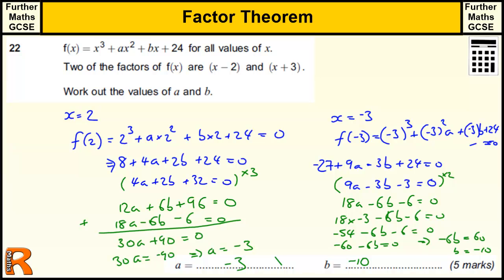Five marks for that. There's one mark for getting the first expression, one mark for getting the second one, one mark for getting some simplified versions — you could take the numbers to the other side, you don't really need to — one mark for making them have a common coefficient so you can add or subtract, and one mark for getting to the answer.